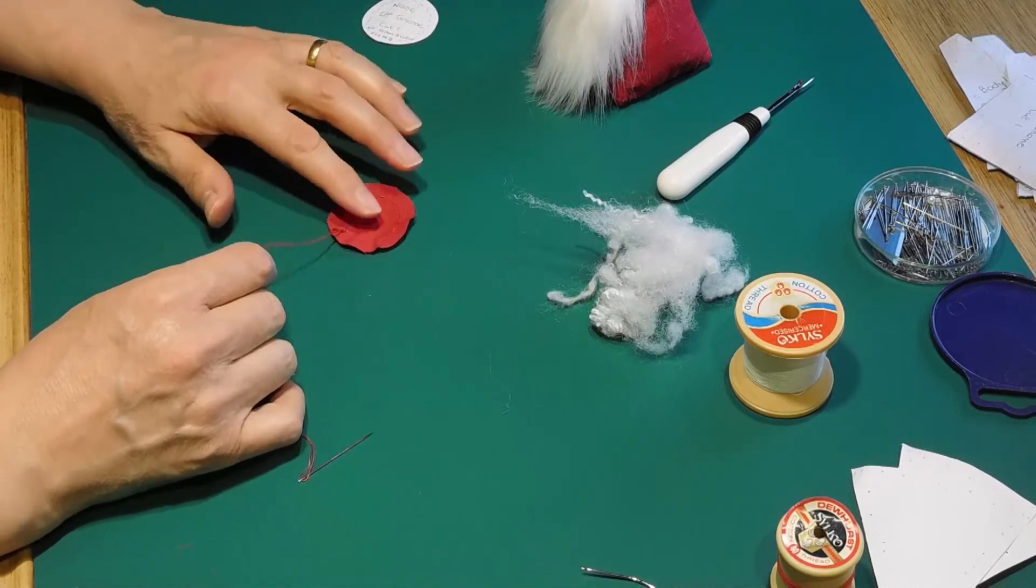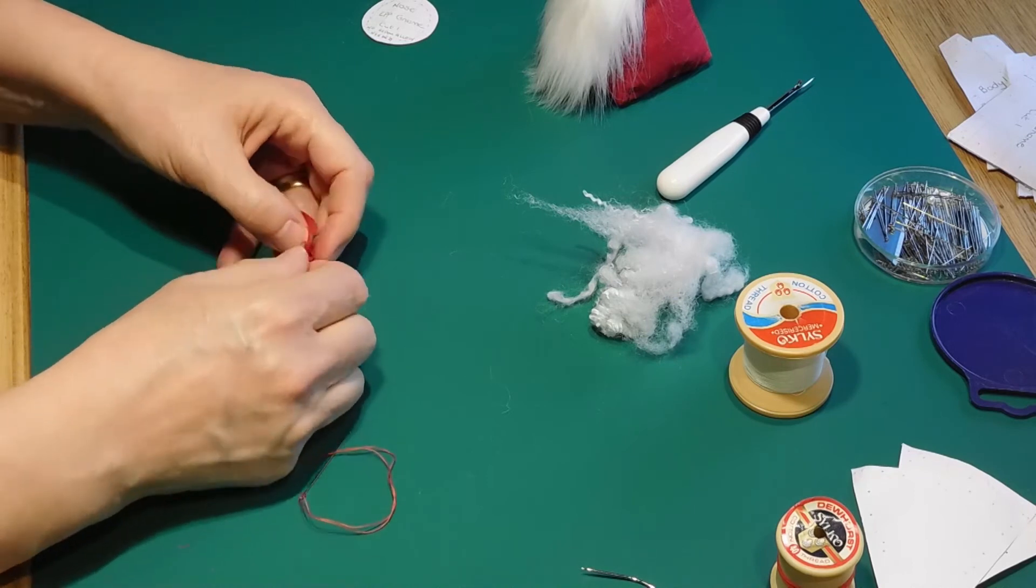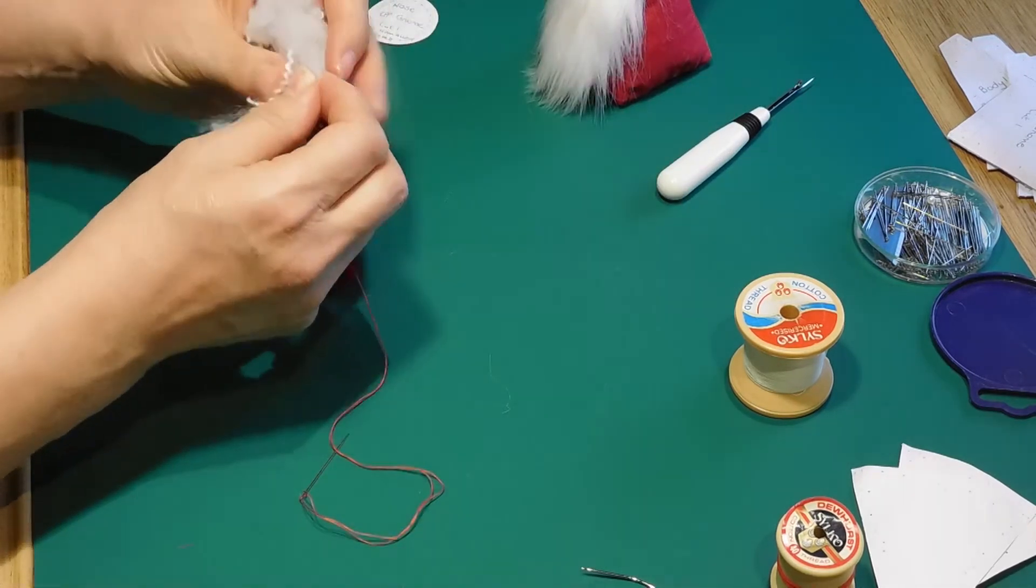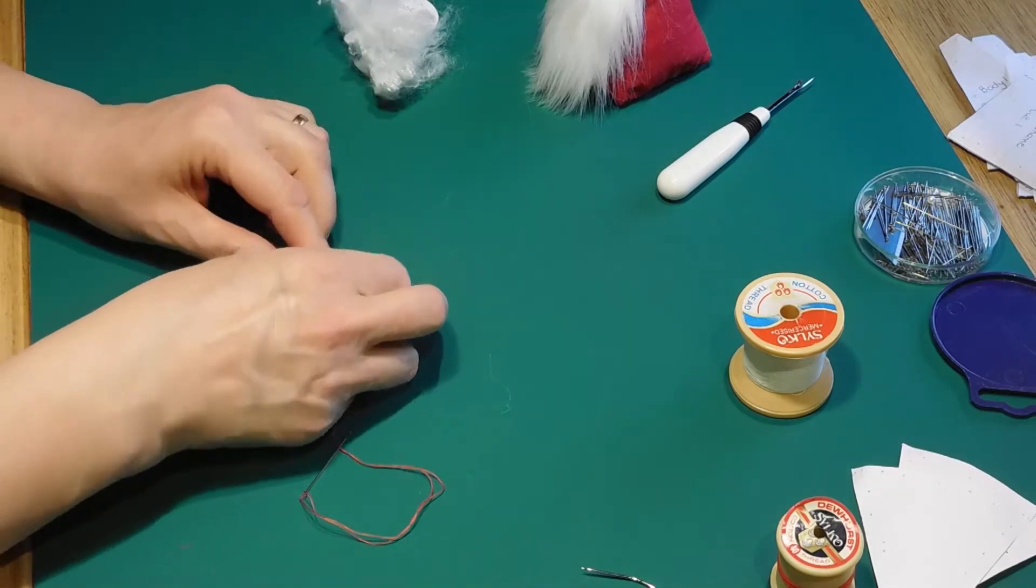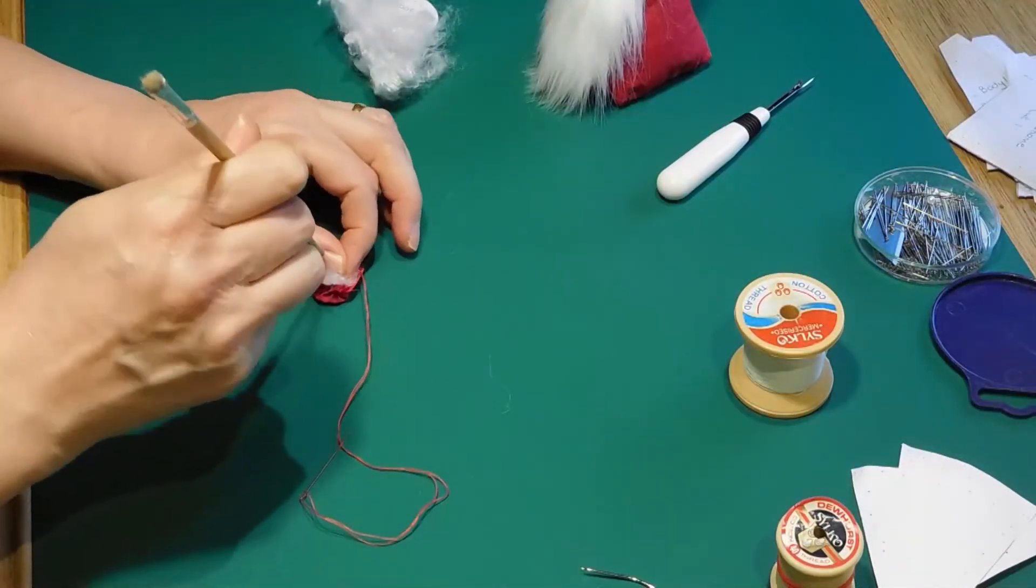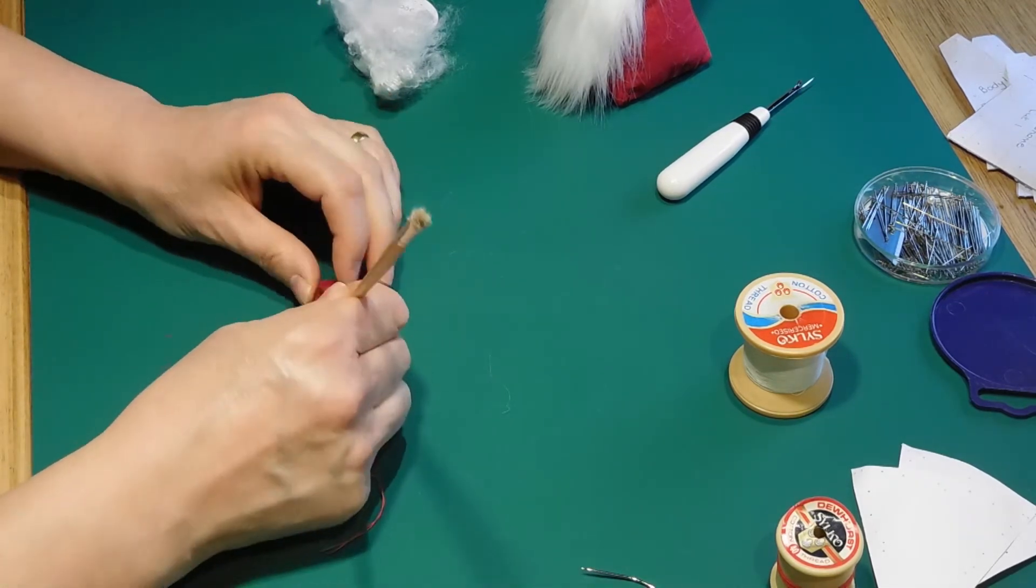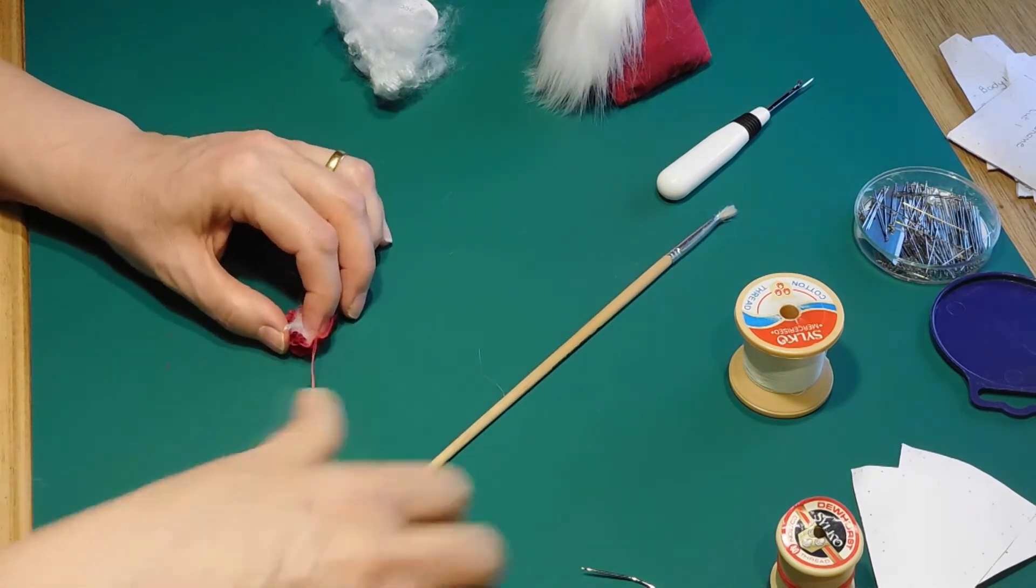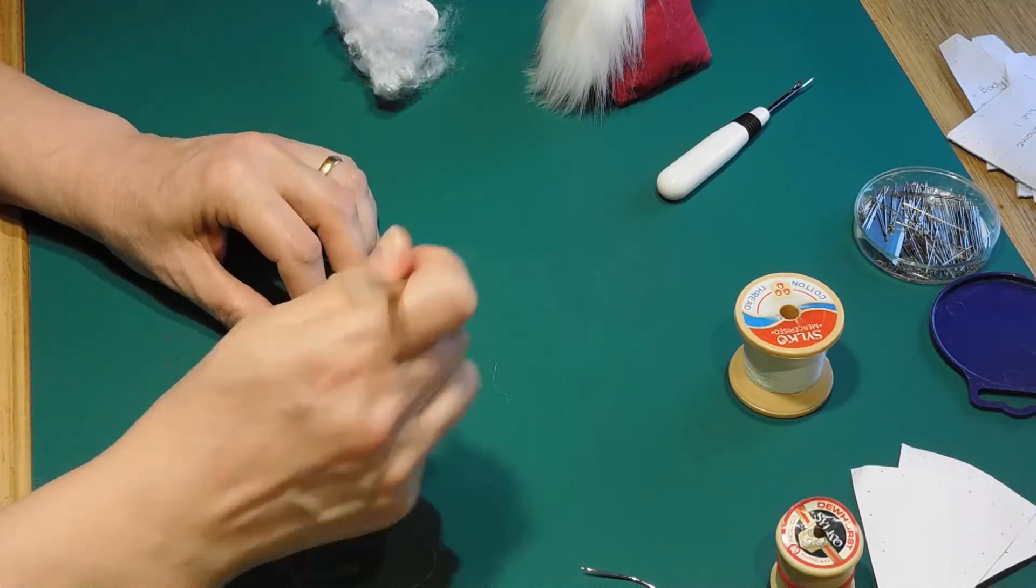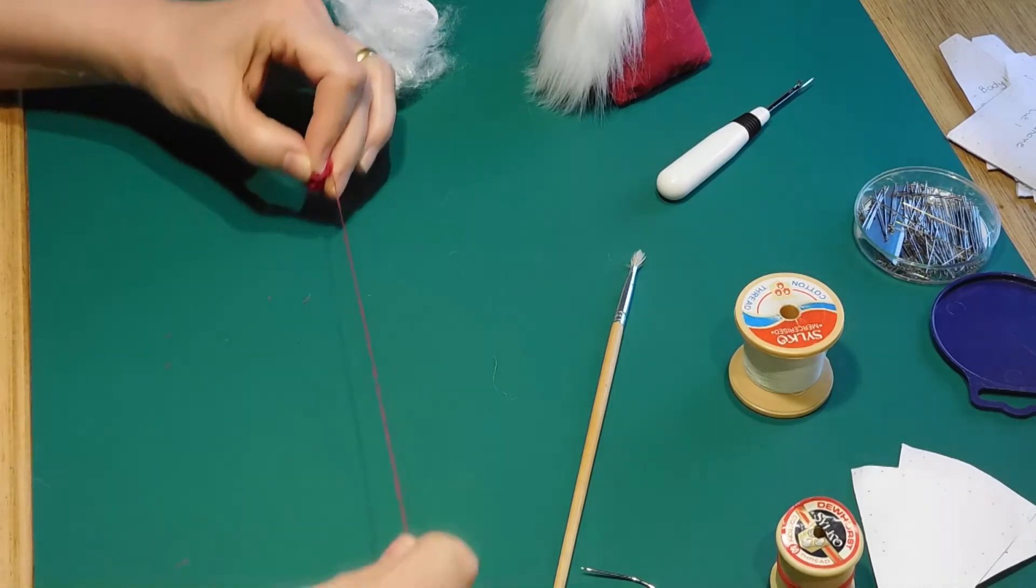When your stitches end up back at the start of the circle, do not fasten it off. Instead pull on the thread and begin to gather up the nose. When it forms a small bowl shape, fill it with a modest amount of stuffing. You may find a chopstick helpful to push the filling into the shape. Keep pulling on the thread to tighten the gathers and ease the material allowance in with the filling.